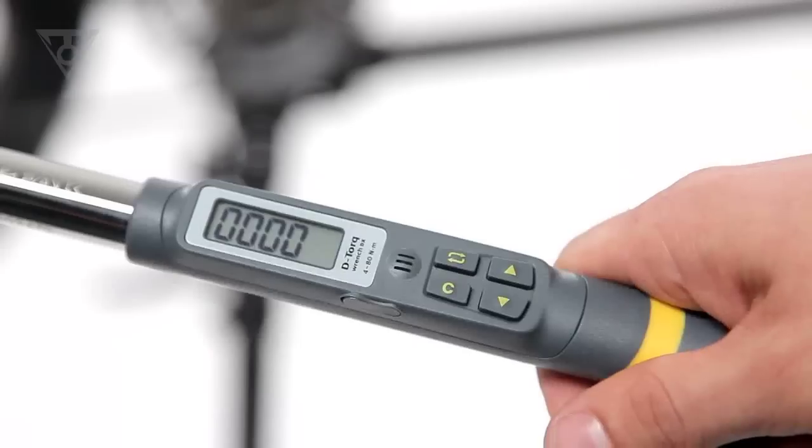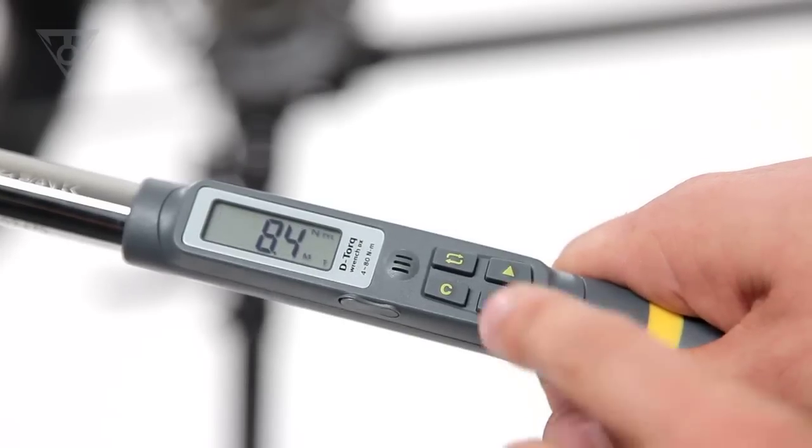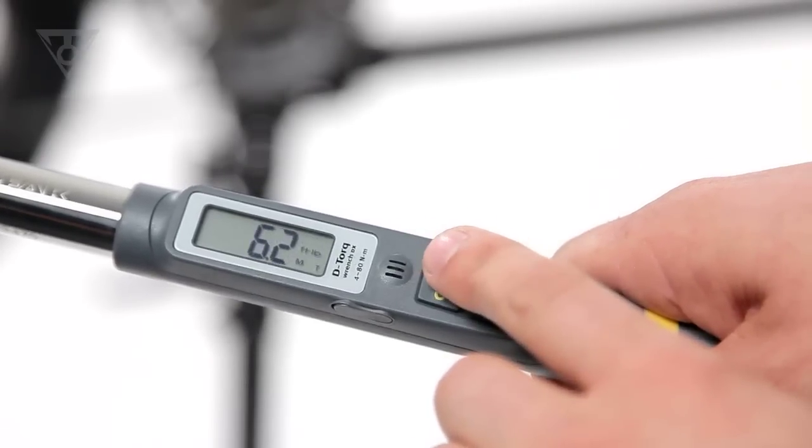The visible display makes the wrenches simple to program in newton meters, inch pounds, foot pounds, or kilogram centimeters.